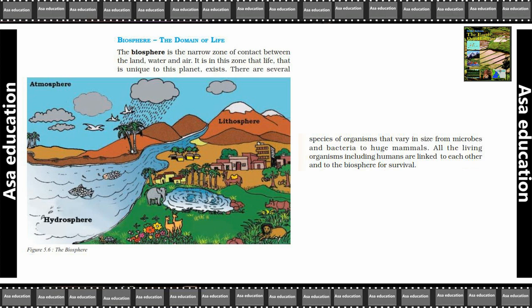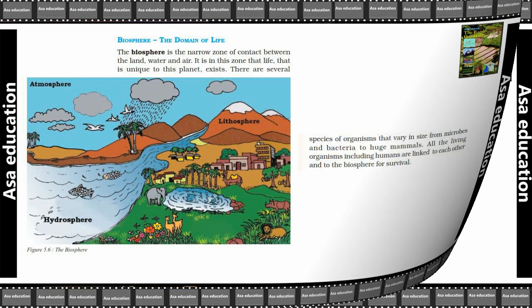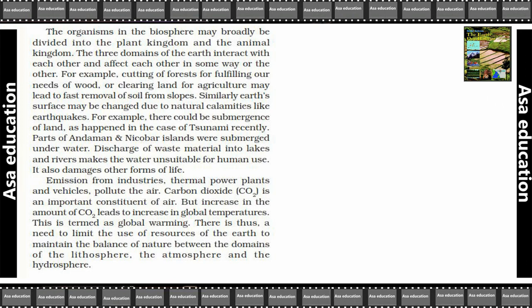All the living organisms, including humans, are linked to each other and to the biosphere for survival. Jitne bhi living organisms hai, chahe hum humans hi kyun na ho, hum saare ke saare ek-dusre se jude hue hai aur biosphere se bhi jude hue hai, kyunki hume life jeene ke liye in teeno elements ka milna bahut zaroori hai. The organisms in the biosphere may be broadly divided into the plant kingdom and the animal kingdom. Inko hum do parts mein divide kar sakte hai — plant kingdom mein aur animal kingdom mein.